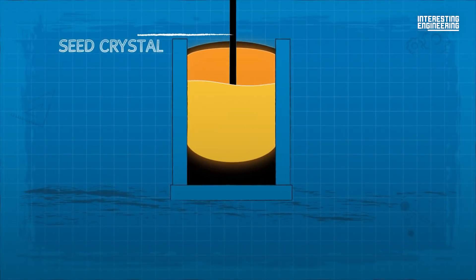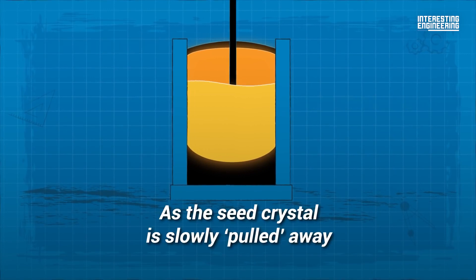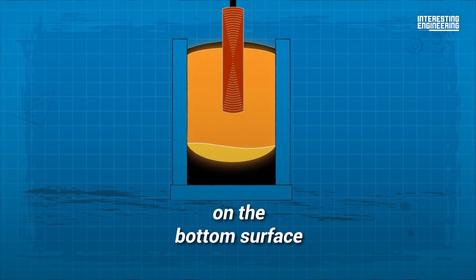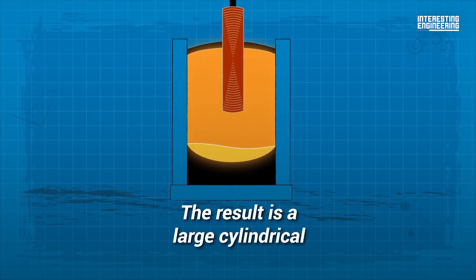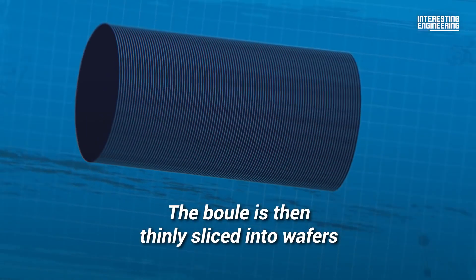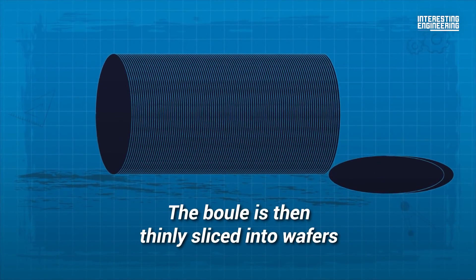Next, a seed crystal is placed in contact with molten silicon. As the seed crystal is slowly pulled away, silicon atoms are deposited on the bottom surface. The result is a large cylindrical boule, or a single crystal ingot of pure silicon. The boule is then thinly sliced into wafers.